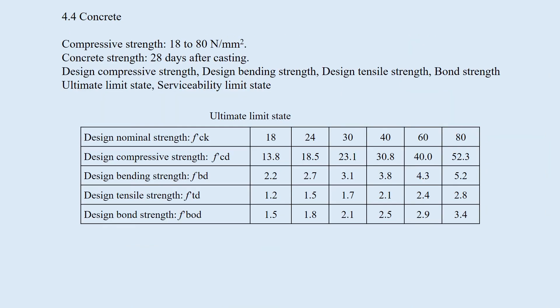The compressive strength of concrete ranges from 18 to 80 newtons per square millimeter. Concrete strength increases with time; the nominal strength is defined at 28 days after casting. The design compressive strength, design bending strength, tensile strength, and bond strength under the ultimate limit state are specified for the given nominal strength, as shown in this table.